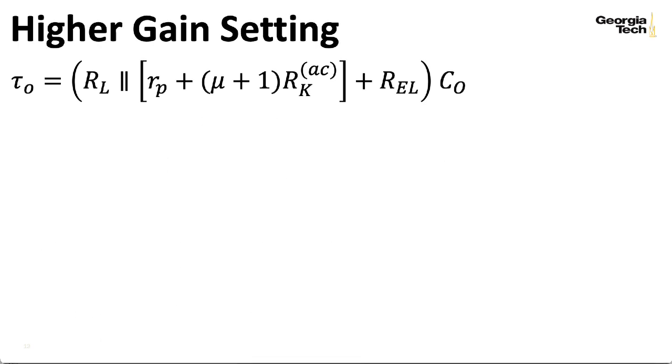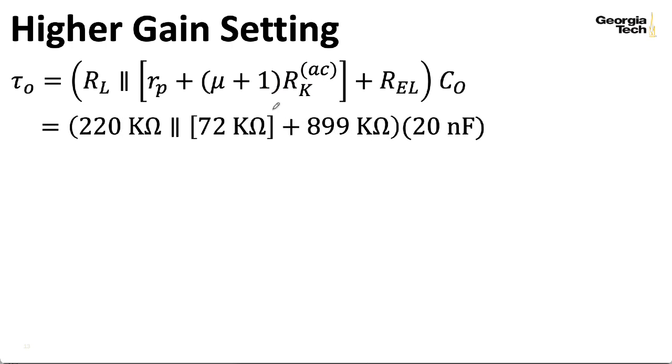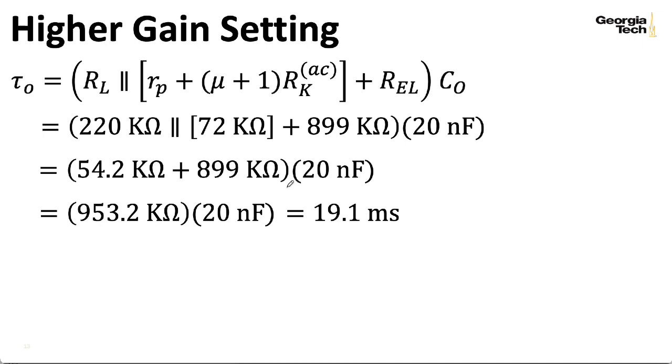Well, what about that high gain setting? For the high gain setting, RKAC is zero. So this term here disappears. And we wind up with 220 kilohm in parallel with 72 kilohm. So that's something like 54.2 kilohm. But that's now really getting swamped by this REL term here. And I wind up with a time constant of 19.1 milliseconds. So around what we had before, and taking the reciprocal of that and dividing by 2 pi, the corner frequency goes up to 8.3 hertz. So it barely changed, again, because REL is so big relative to everything else.